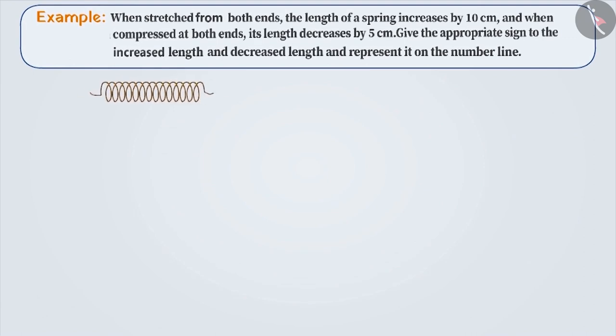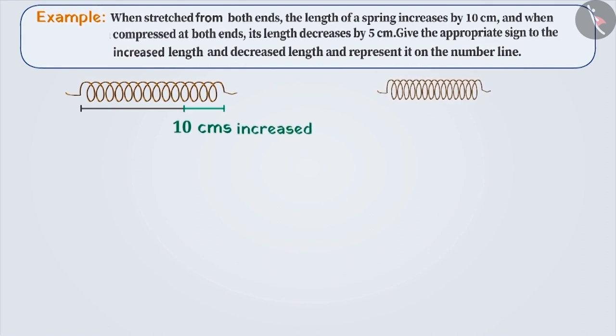Example 2. Length of a spring when stretched from both ends increases by 10 cm and when compressed from both ends, its length decreases by 5 cm. Assign proper signs to increased and decreased lengths and represent it on a number line.